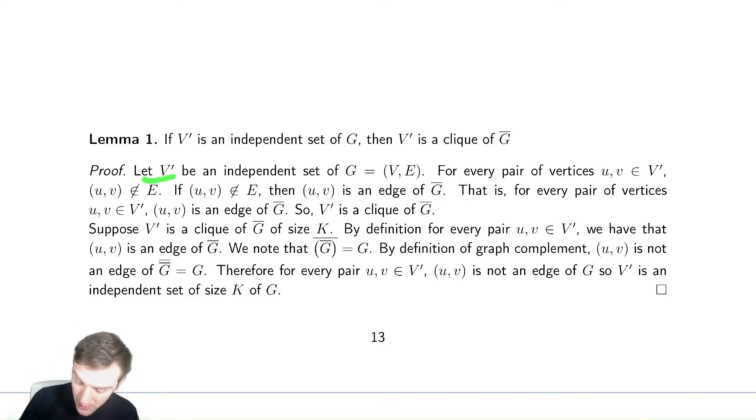I'm going to let V' be an independent set. We're going to start by assuming that V' is an independent set, and I need to show, through the definitions that I know about, that it is a clique. So for it to be an independent set, every pair of vertices in V', it must be the case that they are not an edge of the graph. By definition, because it is an independent set, every pair of vertices is not an edge.